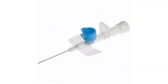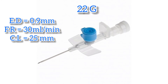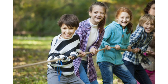The blue colored cannula has gauge 22. Its external diameter is 0.9 mm and the flow rate is 30 ml per minute. Notice that as we decrease the gauge numbers, the external diameters and flow rates correspondingly increase. Its catheter length is 25 mm. The blue colored cannula is used in older children and adolescents.